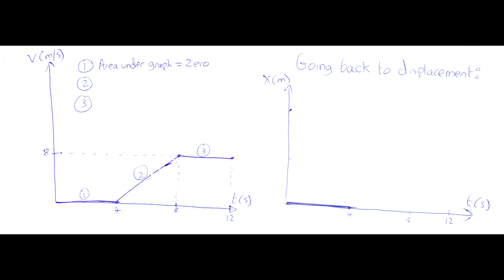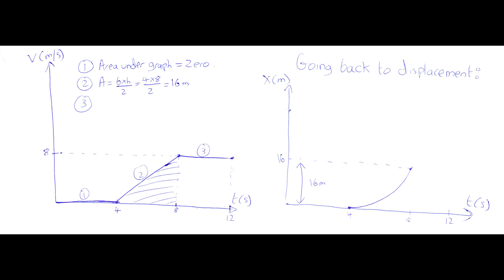Let's assume it starts at the origin, in which case the displacement graph shows it staying at the origin. Section 2 — we really can calculate an area this time. The area between the line and the horizontal axis is a triangle. To find the area of a triangle we do base times height divided by 2, which is 4 times 8 divided by 2, coming out as 16. Although it's an area, it's not 16 meters squared — because what we're actually calculating is displacement, it's 16 meters. The calculation alone doesn't tell us the shape, so we have to think a little more.